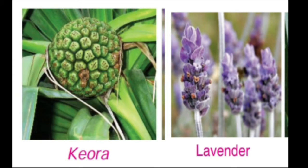Some flowers have very pleasant fragrance. These are used for making perfumes. As you can see the pictures of Kevda and Lavender here. These are the flowers which are having very nice fragrance and that is why they are used to make perfumes. Rose and Jasmine are also examples.